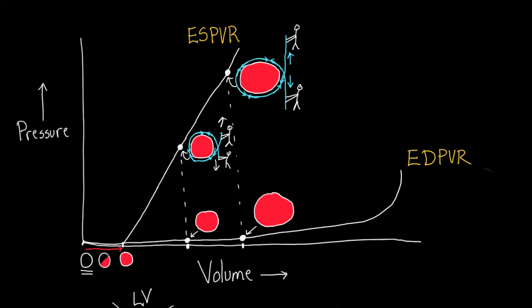Because those workers are yanking so hard and pulling so hard, you basically have a lot of pressure building up on the inside of these ventricles. On the end-diastolic curve, the question is: do we have any workers yanking? And the answer is no — the muscle cells are completely relaxed, just hanging out and taking a nap. As a result, you don't have any increase in pressure; you have a very, very low pressure. That's the reason there's a difference in pressure even though the volumes are the same.